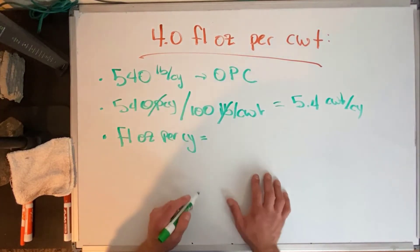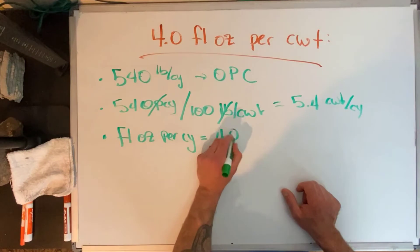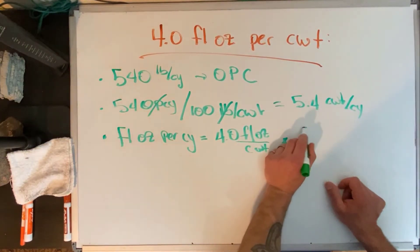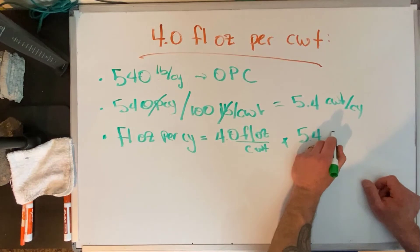We multiply that by our 5.4 CWTs per cubic yard. Our CWTs cancel out.